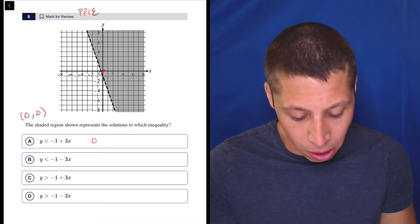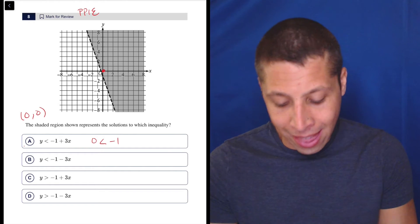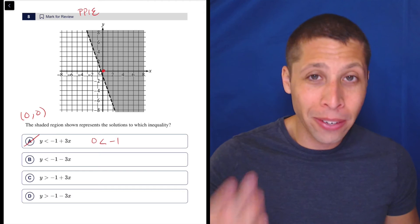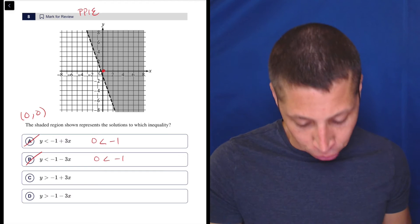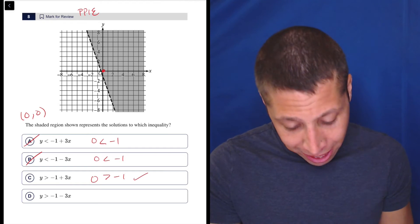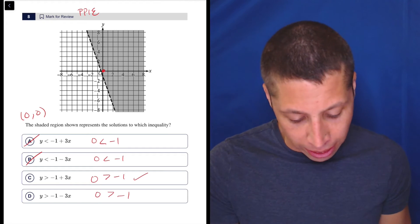So A would become zero is less than negative one. That's not true. The benefit of zero is it's going to knock out all the Xs. Here we have zero is less than negative one. Again, not true. Zero is greater than negative one. That is true. Zero is greater than negative one.